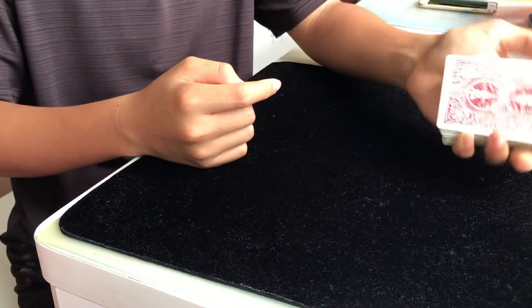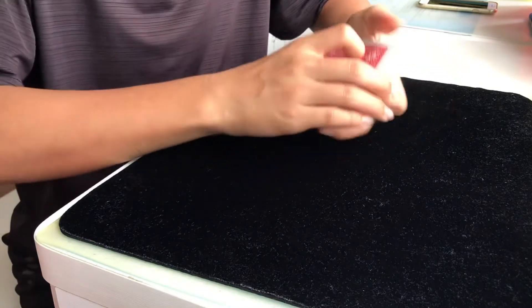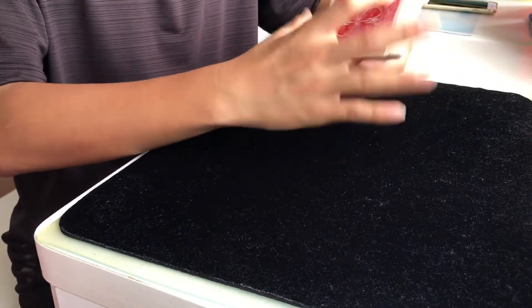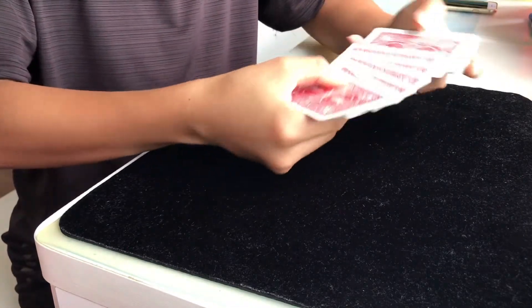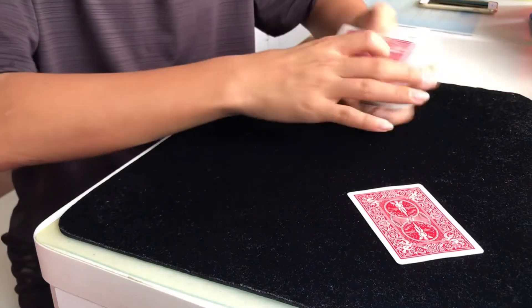What you want to do is when you spread, you want to spread it gently like this. Don't spread in a chunk like this - you're gonna flash the bottom card. So you spread like this and let them touch a card. Let's say they touch this one for example, it is the Nine of Hearts.